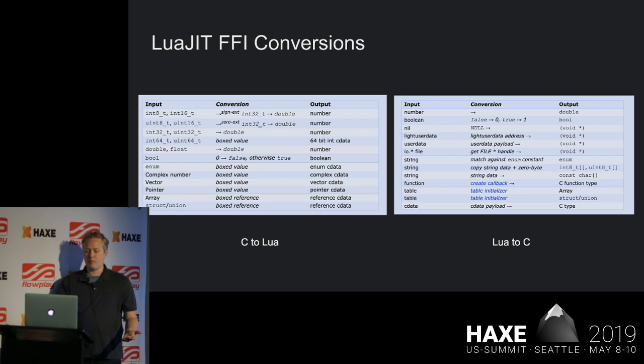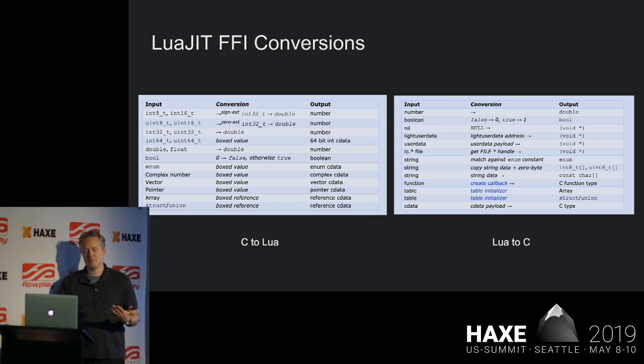LuaJIT does some conversions. You can map a whole bunch of C standard types — Lua only has one numeric type in 5.1 and 5.2. In 5.3 they introduced an integer type but it's still experimental. Lua moves very slowly with feature adoption. Everything kind of maps to very simple types in Lua.